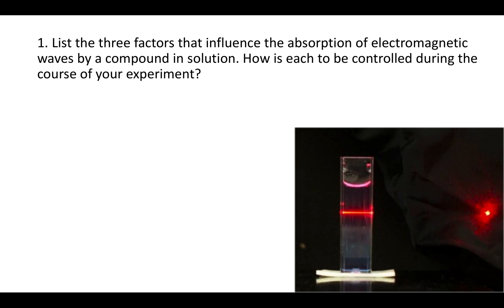So the idea here is we're trying to figure out how much of a compound we have in solution. We're going to shine light through it and the more compound we have the less light we'll be able to get through. There are three factors that will influence exactly how much light gets through.